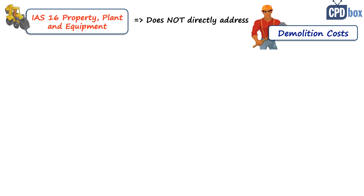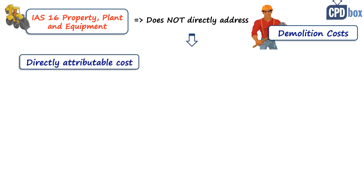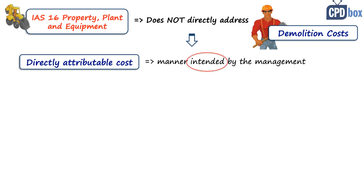IAS 16, paragraph 16, states that the cost of an item of property, plant and equipment includes any cost directly attributable to bringing the asset to the location and condition necessary for it to be capable of operating in the manner intended by the management. The key phrase here is: intended by the management.